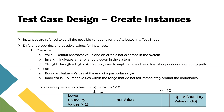Boundary values are the extreme values in a range. You cannot have valid inputs beyond these boundaries. For example, if we have product quantity that accepts a value between 1 to 10, your valid values should be between 1 and 10, and 1 and 10 are considered the boundaries. Beyond these boundaries they could be invalid inputs, which you should consider for negative testing, but they are not valid values.